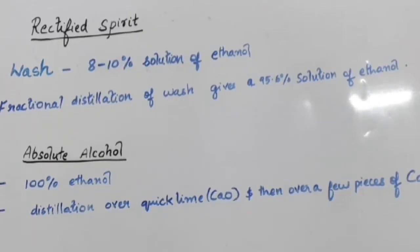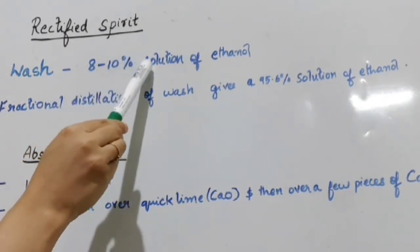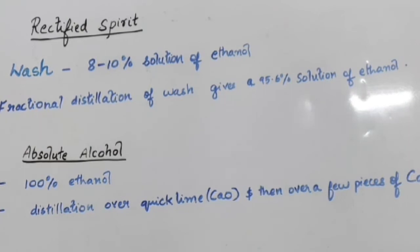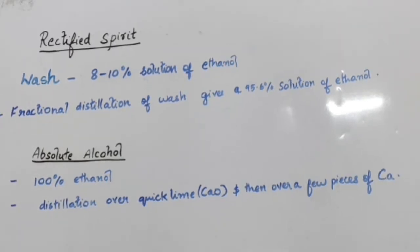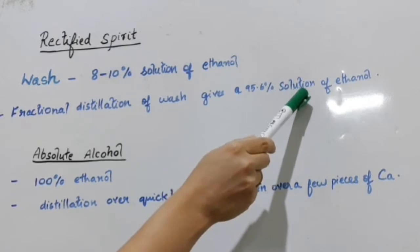After fermentation of molasses, we get an 8 to 10 percent solution of ethanol, which is a very low concentration. This 8 to 10 percent solution obtained after fermentation of carbohydrates is called 'wash.' To increase the ethanol concentration, we perform fractional distillation of the wash, which gives a 95.6 percent solution of ethanol.